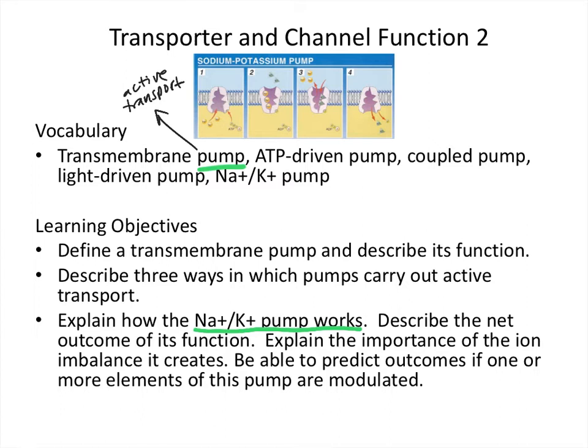As an example, we're going to talk about how the sodium-potassium pump works, as well as the importance of the ion imbalance that it creates. This is absolutely crucial for the function of neurons, for them to fire and transmit electrical impulses. It's also essential for heart cells to contract.